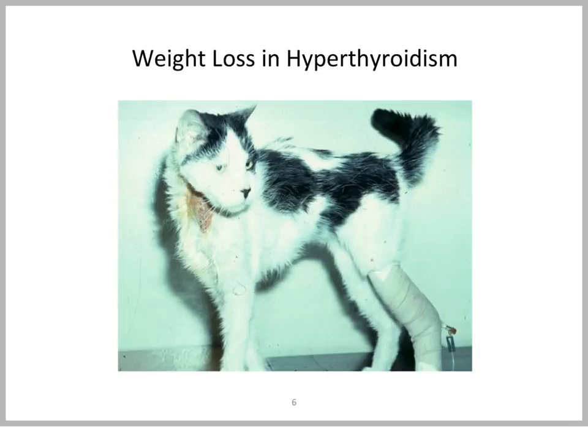On the other side, in the cat with hyperthyroidism, you can see significant body weight loss where the animal enters a catabolic situation — using fat stores, breaking down protein via gluconeogenesis — and we get an animal that can lose dramatic amounts of body weight.